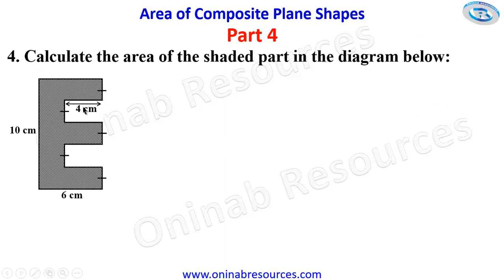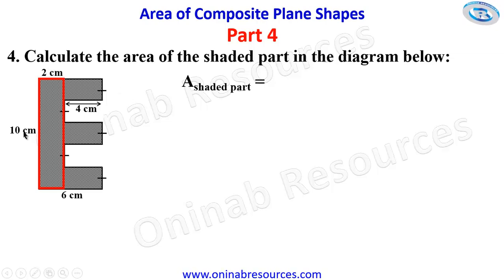We then go to problem 4. Calculate the area of the shaded part. To calculate the area, we are going to split into rectangles — rectangle, rectangle, rectangle, rectangle — find their areas and sum them up. From here to this place is 6, and from here to this place is 4, so the breadth of this rectangle is 6 minus 4, giving us 2. The area of this rectangle is length times breadth: 10 times 2.